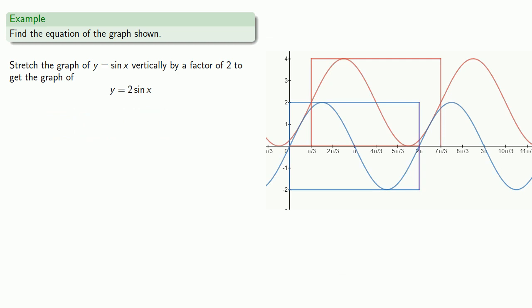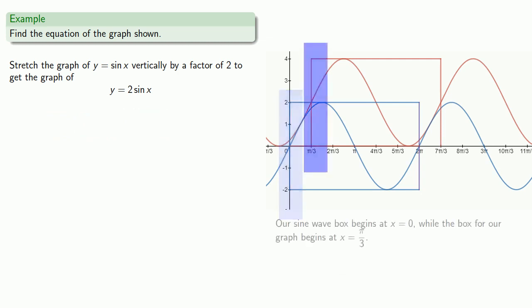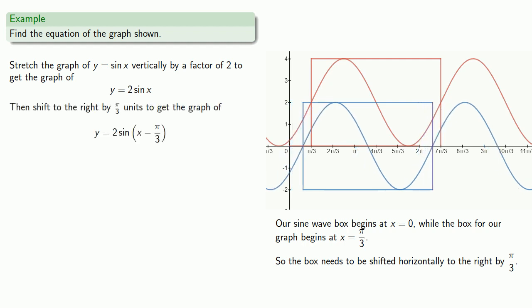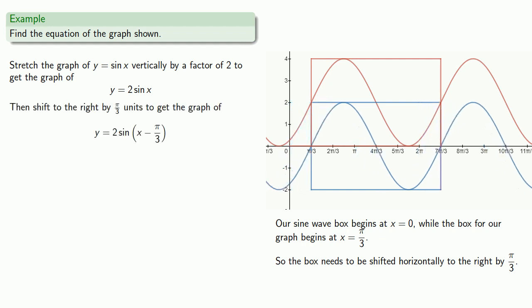Our sine wave box begins at x equals 0, while the box for our graph begins at x equals pi thirds, so the box needs to be shifted horizontally to the right by pi thirds. We adjust our equation accordingly, giving us the graph of y equals 2 sine of x minus pi thirds.